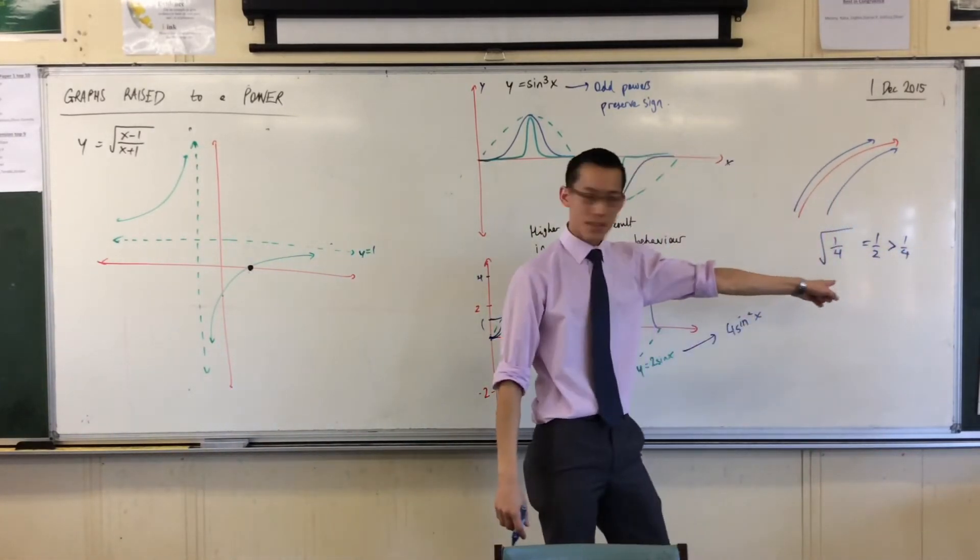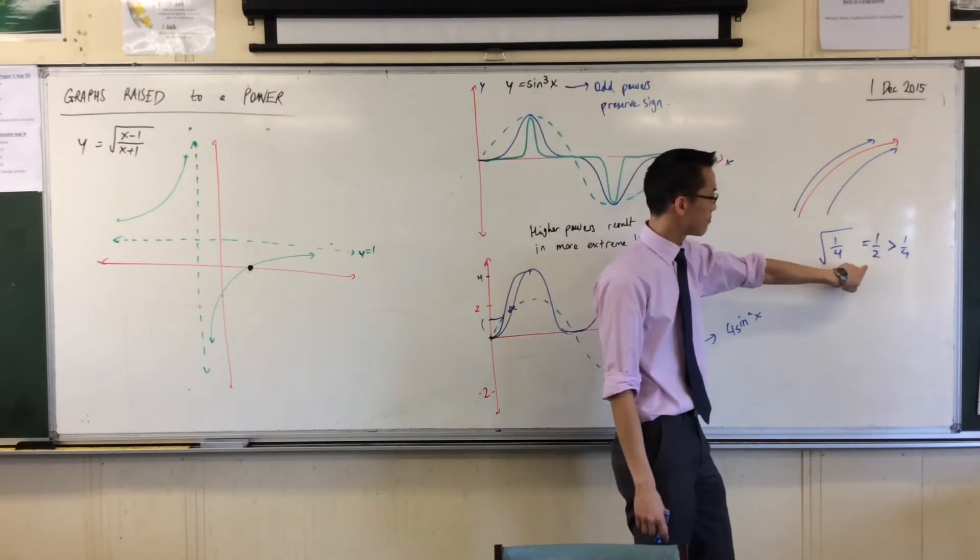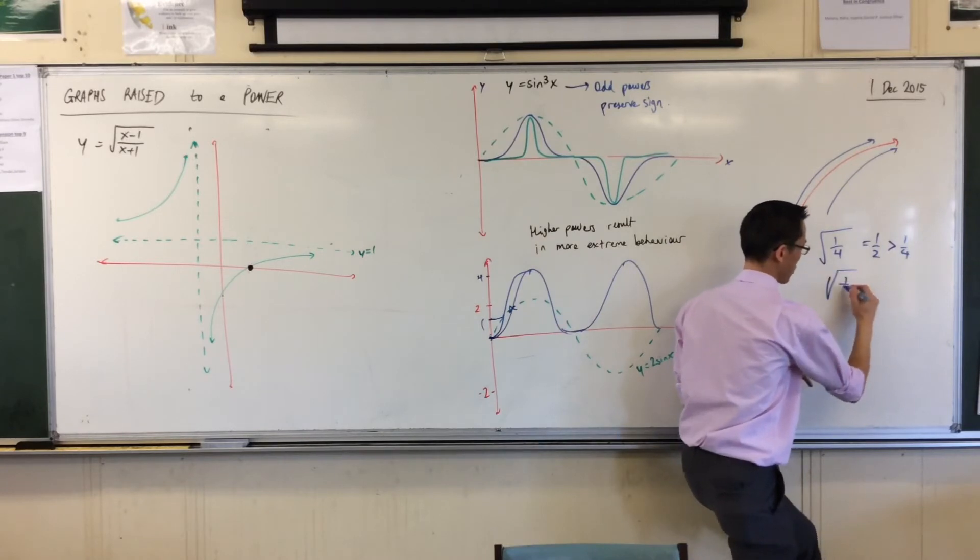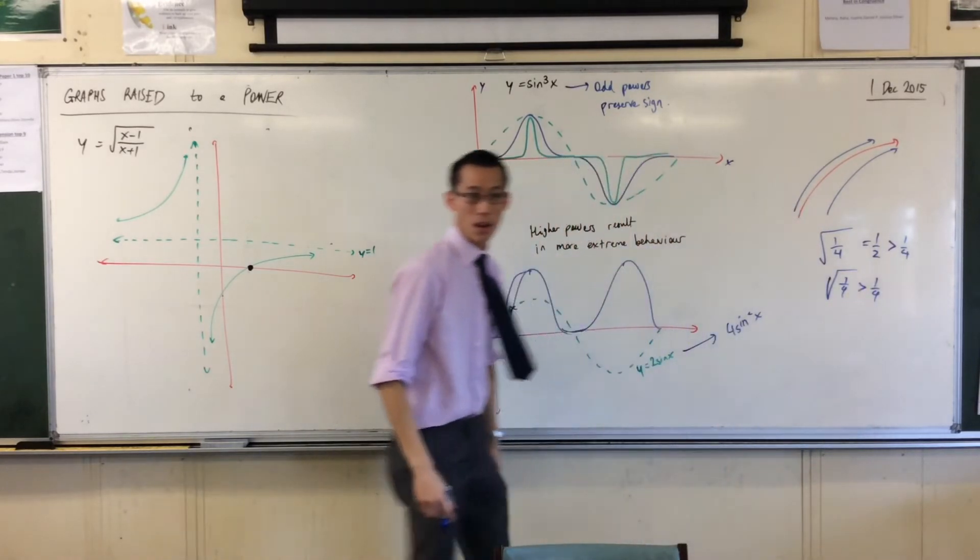Right? So what I get out of this, if these two are equal and they're bigger than this guy, then the square root of a quarter is greater than a quarter, right?